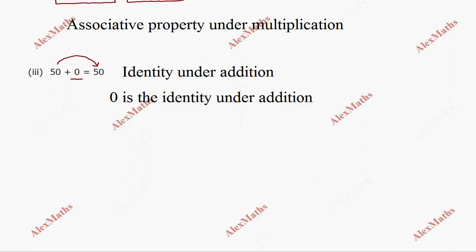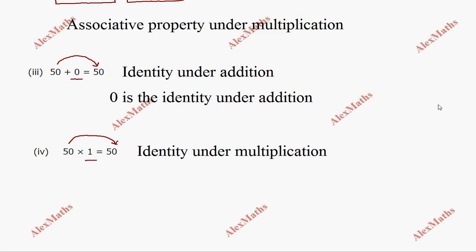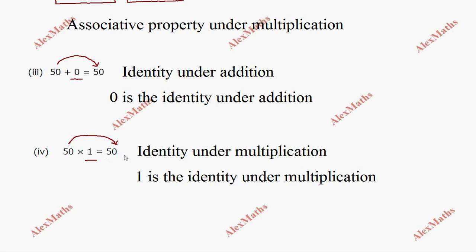Subdivision 4: 50 into 1 equals 50. When a number is multiplied by 1, the result is the same number. This is the multiplicative identity property — identity under multiplication. So 0 is the identity under addition, and 1 is the identity under multiplication.